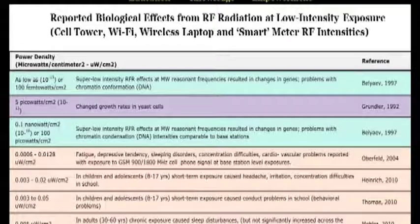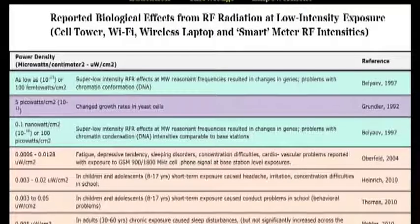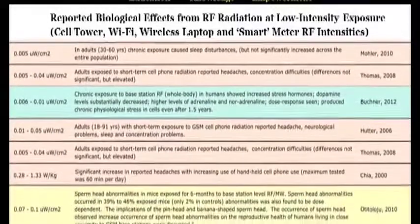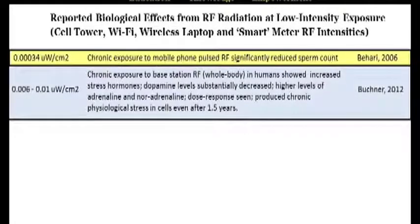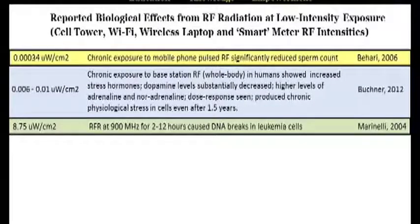Let's take a look at charts that summarize some of these findings, specifically looking at the biological effects of low intensity radio frequency radiation exposure, such as that emitted from smart meters and Wi-Fi. Chronic exposure to a power density of 0.00034 microwatts per centimeter squared resulted in significantly reduced sperm count — almost three million times lower than the US and Canadian guideline of 1000 microwatts per centimeter squared. Exposure to 0.006 to 0.01 microwatts per centimeter squared resulted in an increase in stress hormones while dopamine levels decreased. And exposure at 8.75 microwatts per centimeter squared for 2 to 12 hours caused DNA breaks in leukemia cells.